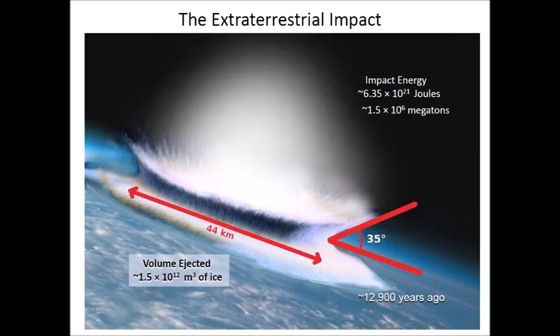The ballistic trajectory associated with each Carolina Bay is used to calculate the speed of the ice projectile, which is then used with equations relating energy to crater size to calculate the energy that formed each bay. The law of conservation of energy allows us to combine the energy of all the bays to estimate the energy of the extraterrestrial collision. The combined energy associated with half a million Carolina Bays is approximately 6.35 times 10 to the 21st joules, or 1.5 times 10 to the 6th megatons of TNT.